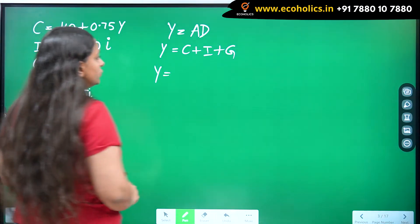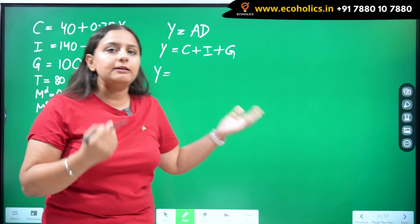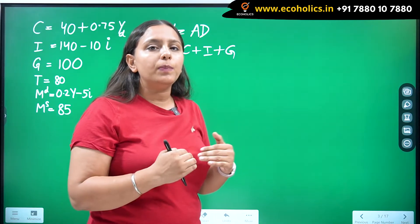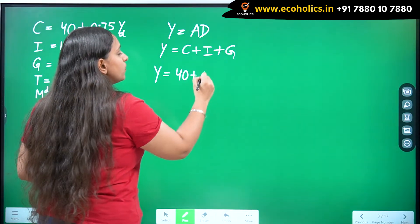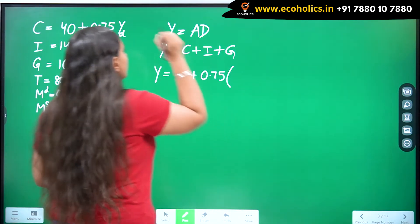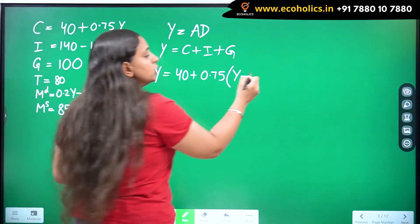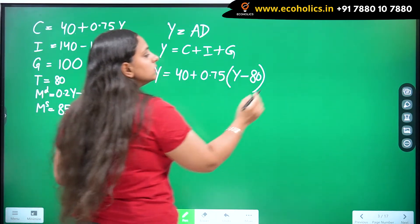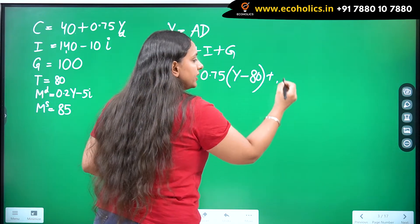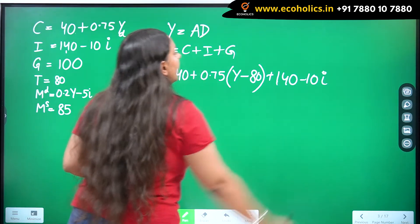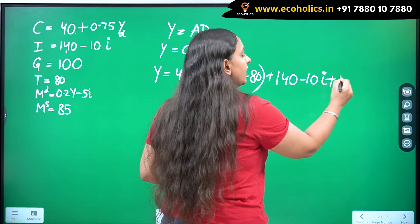Now let me put all these values. When I input the consumption function, note that it uses disposable income — the income left after paying taxes. So it becomes 40 + 0.75(Y − 80), since taxes are 80. Then the investment function is 140 − 10i. Government expenditure is exogenous and given as 100, so I add that as well.